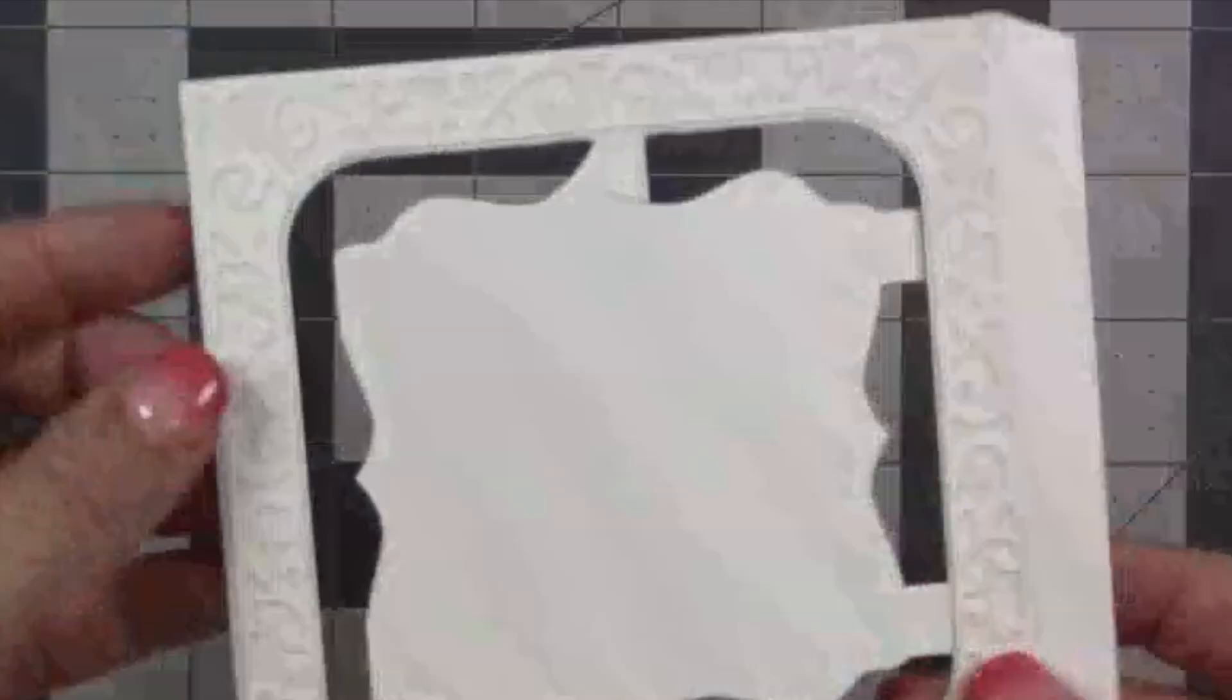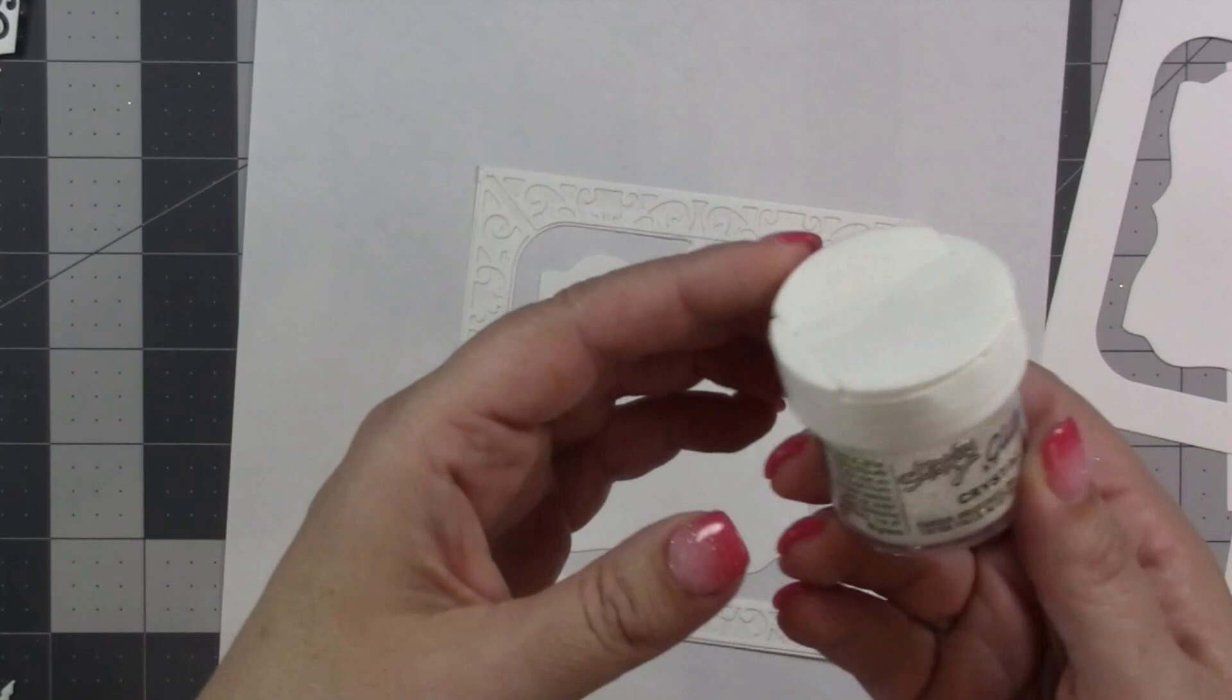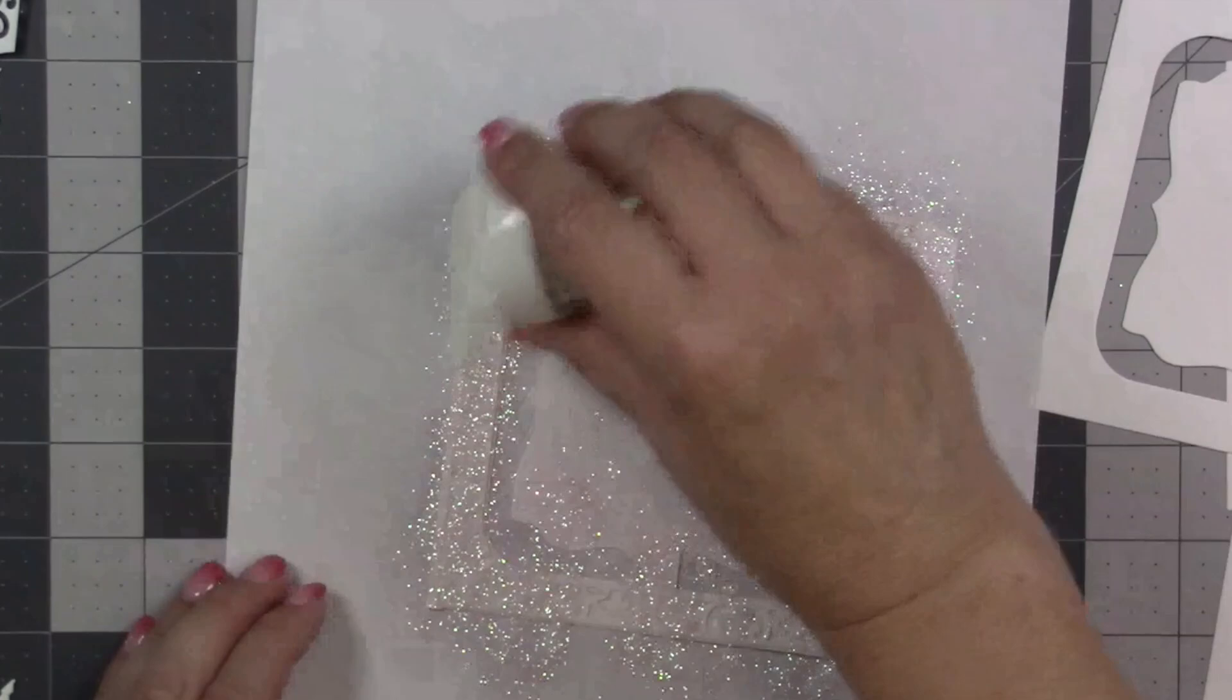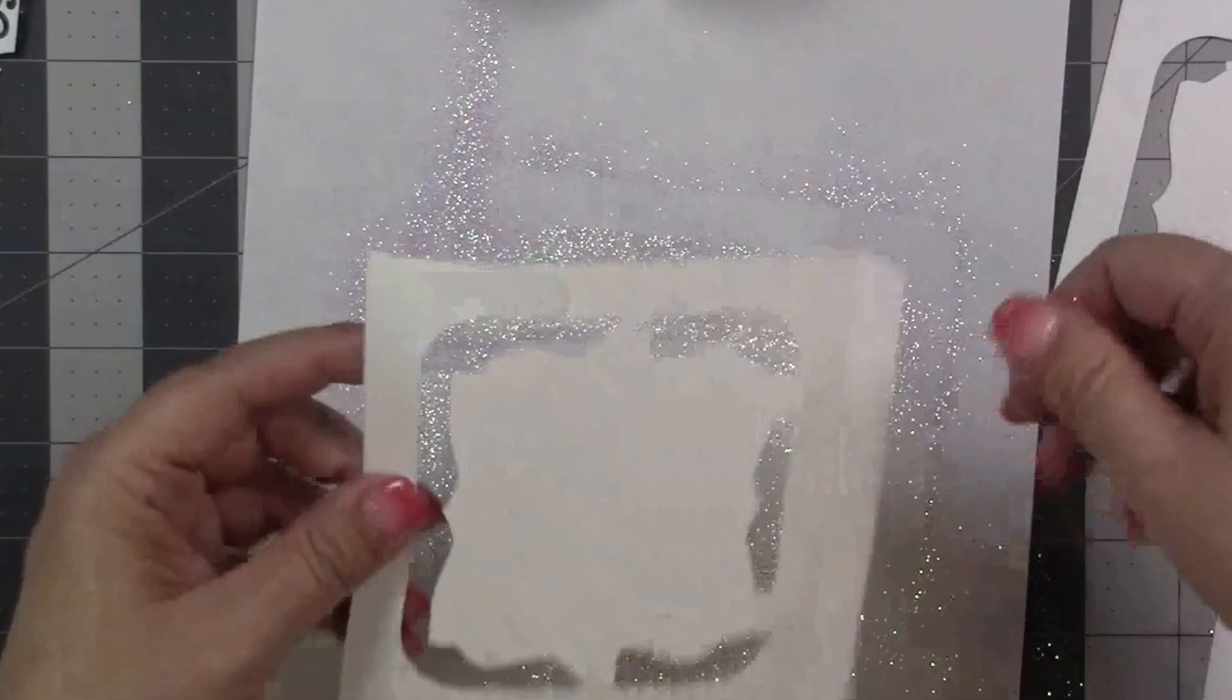Now what I want to do is get rid of all the leftover adhesive by covering it with glitter. If you wanted to try this technique but didn't want a sparkly frame you could also try it with just some embossing powder. It could even be clear embossing powder and then just heat set it.